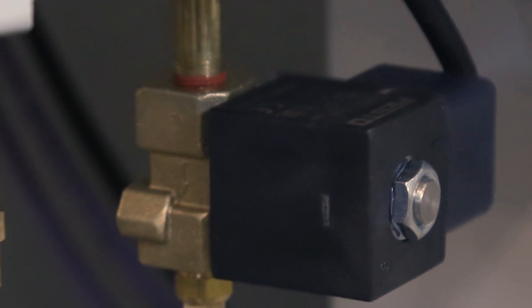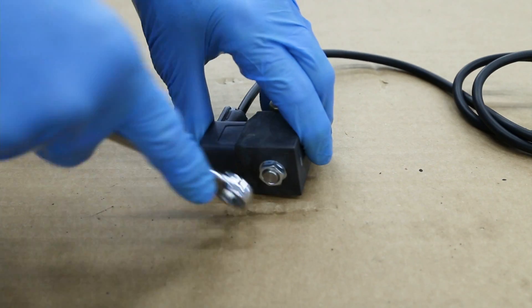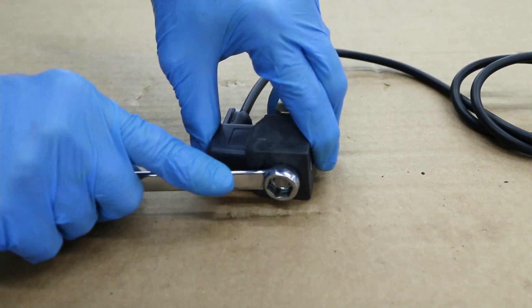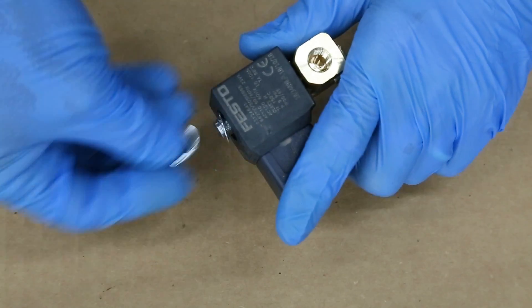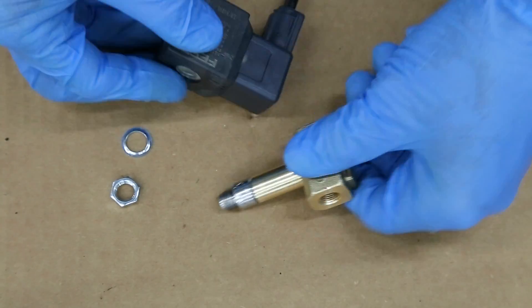The limited access under the air lube cabinet makes it easier to work on the Festo solenoid once it's off the machine. Use the half inch box wrench to remove the nut from the solenoid assembly. Set the nut and washer aside and lift the coil assembly off of the valve subassembly.